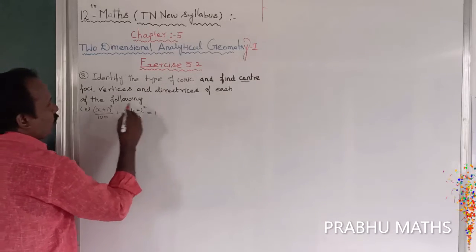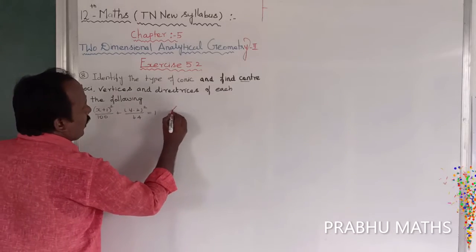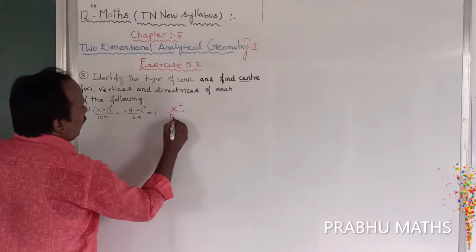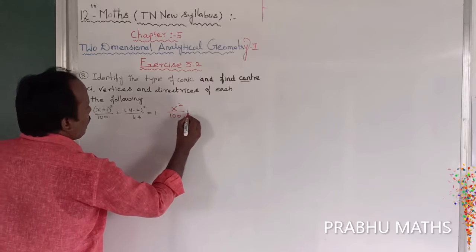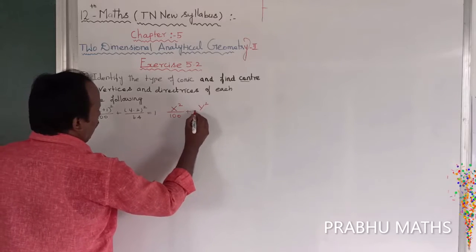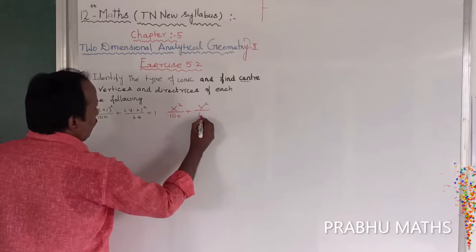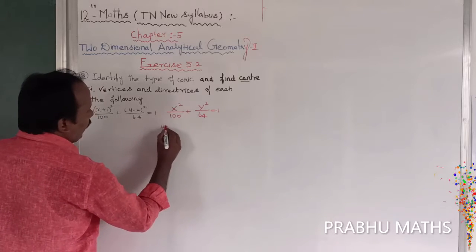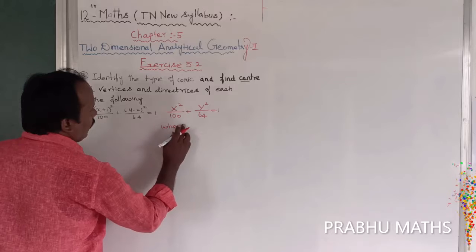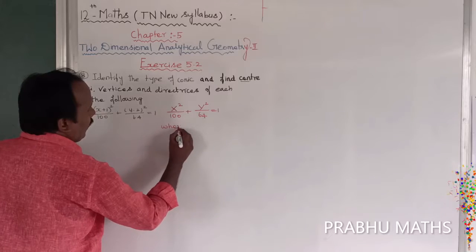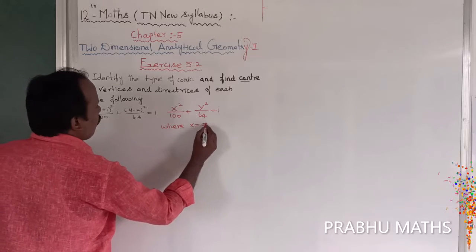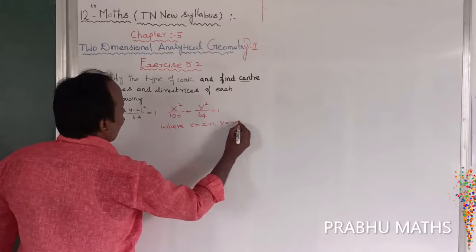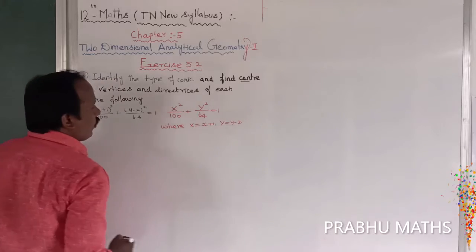This fully cancels to x, so x² divided by 100, plus y² divided by 64, where X = x + 1, Y = y - 2.